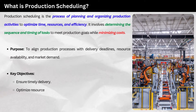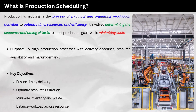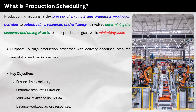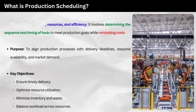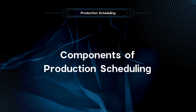Key objectives: ensure timely delivery, optimize resource utilization, minimize inventory and waste, and balance workload across resources. Now let's look at the components of production scheduling.